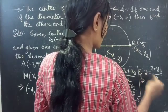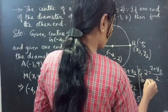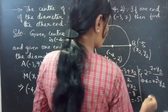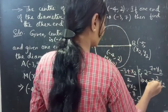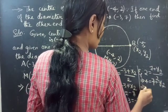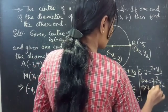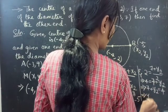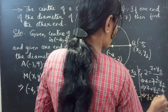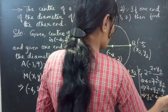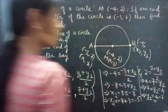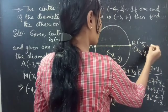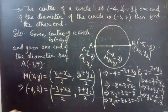From the y-component: 2 times 2 gives 4 equals 7 plus y2. So y2 equals 4 minus 7, which gives y2 equals minus 3.